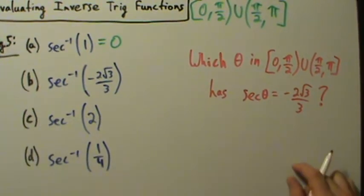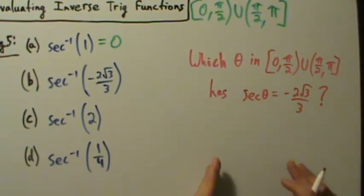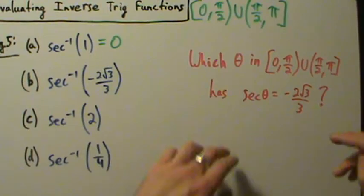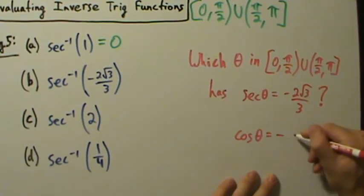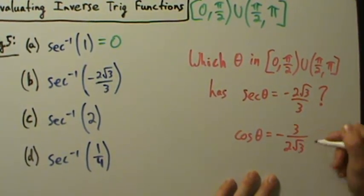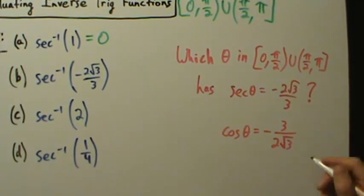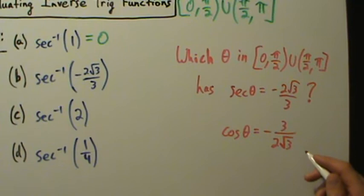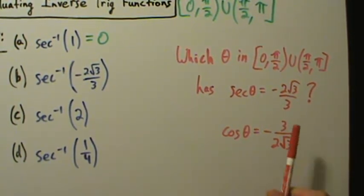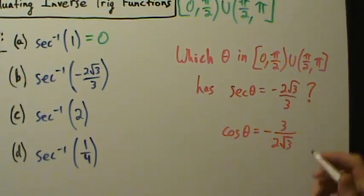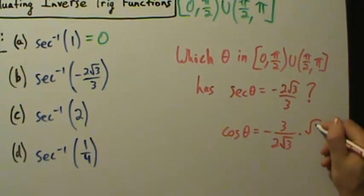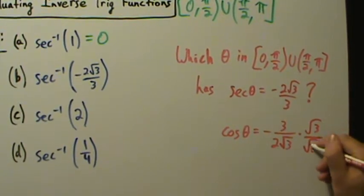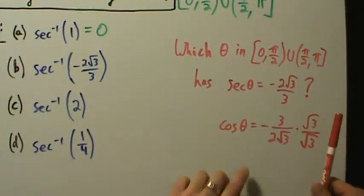We can do the reciprocal shortcut again — take the reciprocal of both sides. The reciprocal of secant of theta is cosine of theta. The reciprocal of negative 2√3/3 is going to be negative 3 over 2√3. That looks a bit unusual, so we rationalize the denominator. This denominator exists because the original problem was already rationalized, making it a bit more complicated than necessary. We multiply the top and bottom by √3.